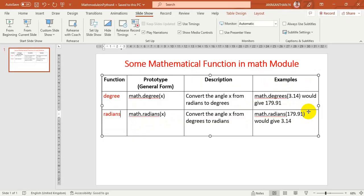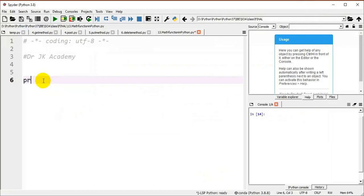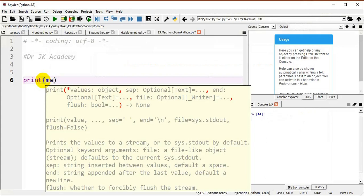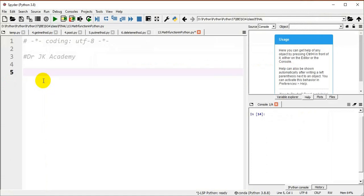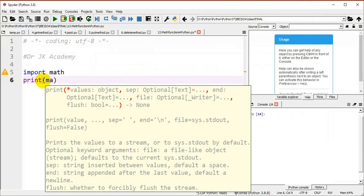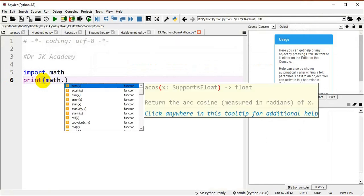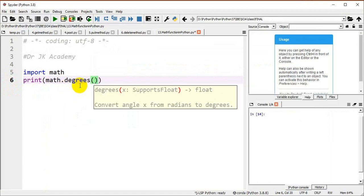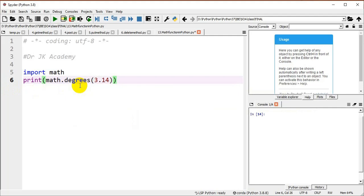We will see the demo. Print math, import math.degrees(3.14). We will execute the program. We will get 179.908.